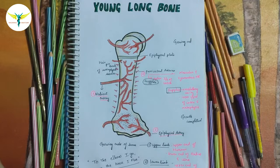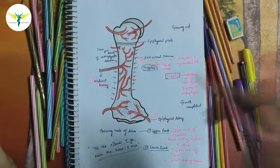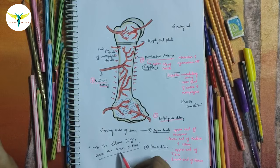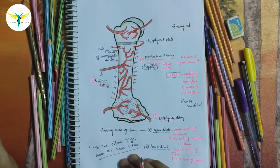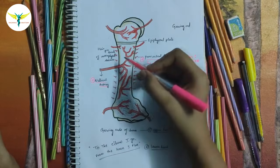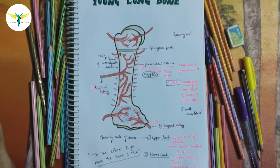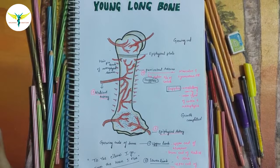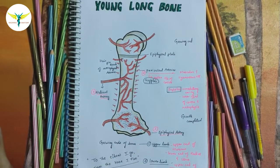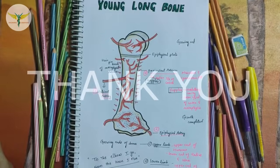So this is all about the blood supply of the young long bone. Remember the mnemonic: 'To the elbow I go, from the knee I flee' for the growing ends and the nutrient artery direction. If you like this video, please subscribe to the channel and suggest topics for future videos. Thank you.